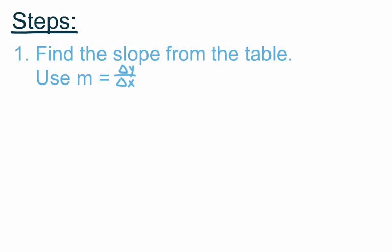Unlike Lesson 5.1, where we would use y2 minus y1 over x2 minus x1 to find slope, we're now using an easier formula — at least in my opinion — where we're going to use m is equal to delta y over delta x. In a moment we'll take a look at some examples of this and review how we use delta y over delta x to find slope from a table.